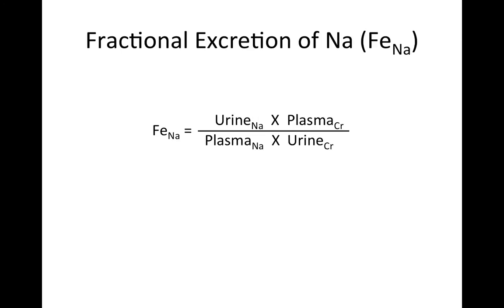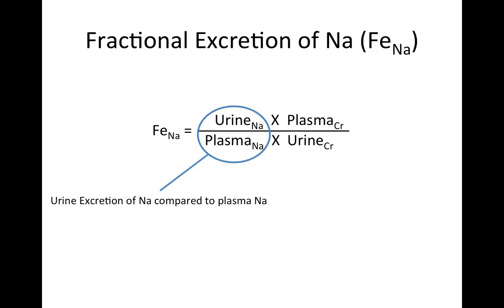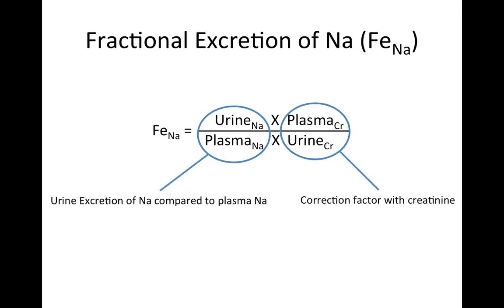The FENa — fractional excretion of sodium — is an important tool for differentiating causes of hypotonic hyponatremia. The equation's first part is the ratio of urine sodium to plasma sodium, telling you how much sodium is being excreted relative to plasma sodium, giving a sense of how much the kidneys are trying to hold onto sodium. The second part is a correction factor for GFR using creatinine.